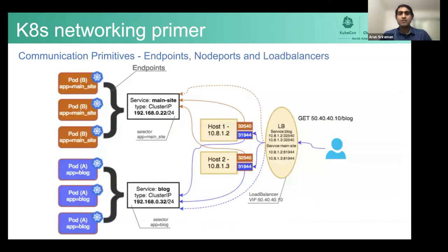And when it comes to north-south, you have endpoints, node ports, and load balancers. Either north-south can be that the pod is trying to reach out to the internet, or in most cases, what happens is a client is trying to connect to an application or service that you're running within Kubernetes.